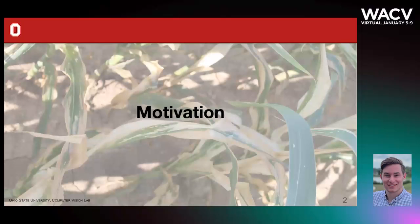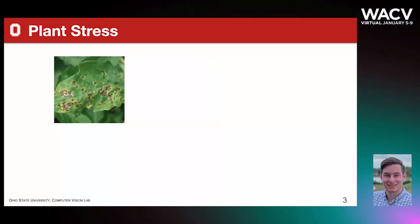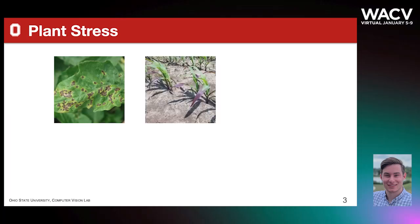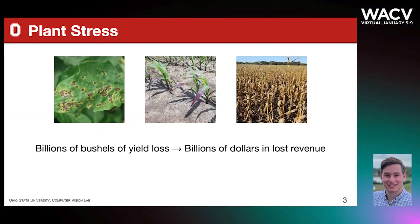Our motivation for this work lies in the area of plant stress identification, where a stress is an external condition that adversely affects a plant. Plant stresses begin with affecting a single plant, spreading to a localized area, and eventually taking over entire fields. This results in billions of bushels in yield loss, equating to billions of dollars in lost revenue.